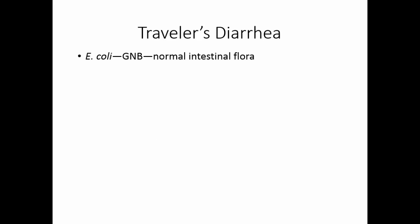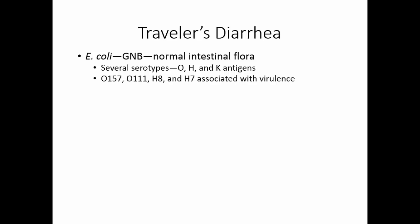Traveler's diarrhea is usually caused by E. coli, a gram-negative bacillus that is normal intestinal flora. However, there are at least 150 different serotypes of E. coli. A serotype is determined by proteins on the cell wall (O antigens), the flagella (H antigens), and the capsule (K antigens). E. coli does not really have a capsule, so only O and H antigens are found. The serotypes O157, O111, H8, and H7 are associated with virulence.